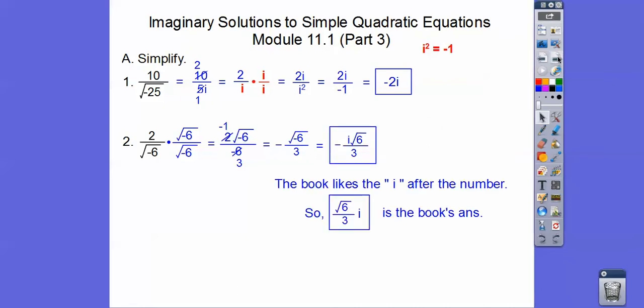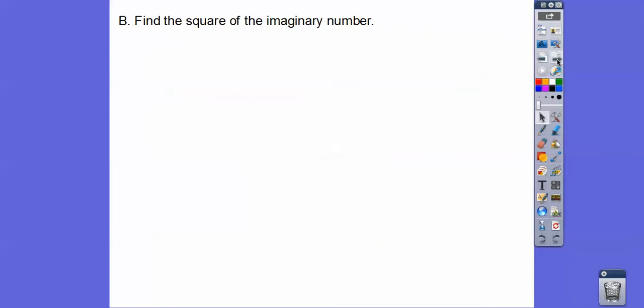You'll find in the next lesson, especially, that the book likes to put the i after the number, so root 6 over 3i might be your book's answer. Either one of these are okay with me. I kind of like them both, so whatever you feel like.